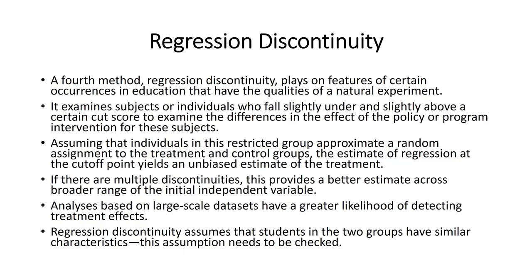The big thing about regression discontinuity is having a continuous variable that is continuously correlated with another variable, but for which there is a value on that continuous scale that is meaningful — important because some sort of policy, practical intervention, or program has been implemented for people that fall slightly above that value. If that happens, you have the conditions set for the application of regression discontinuity, making it a very capable technique for estimating the treatment effect under these types of conditions.